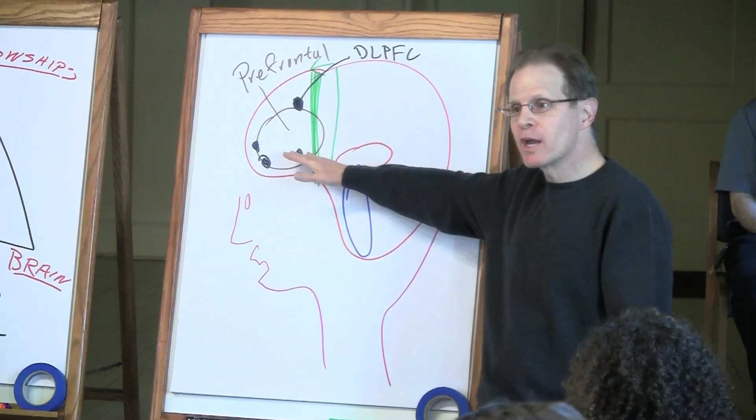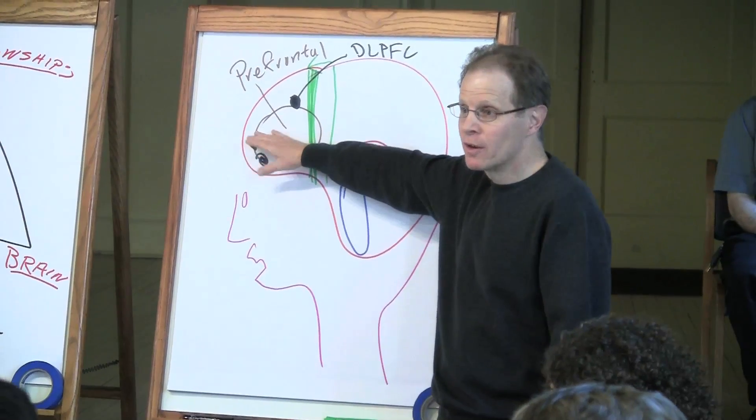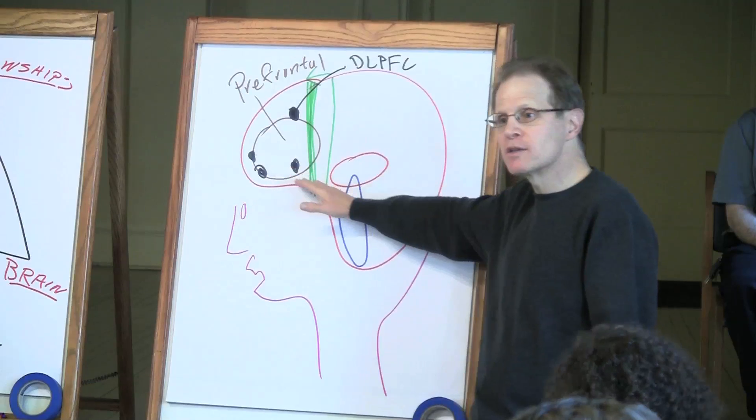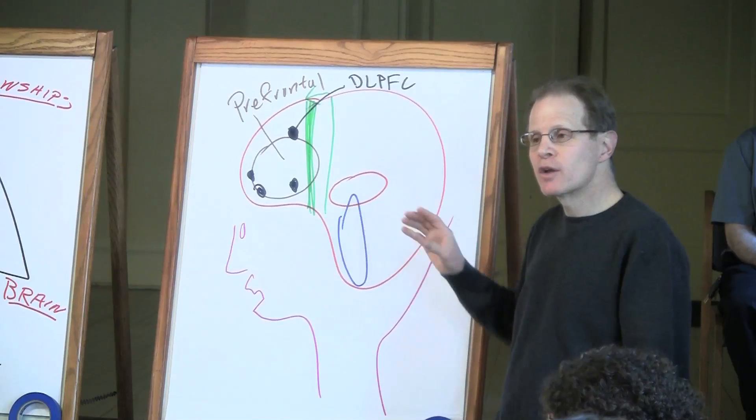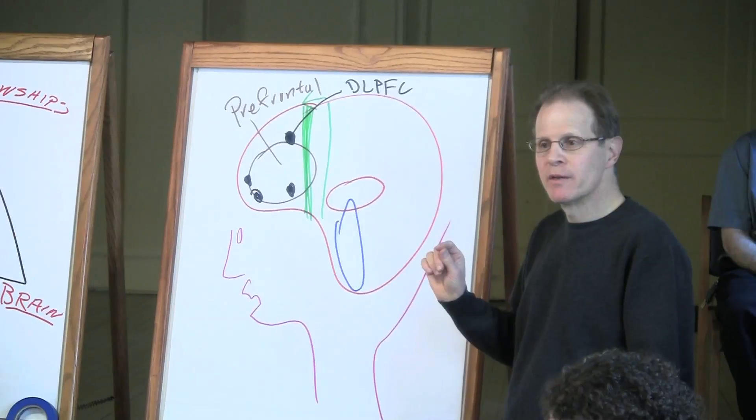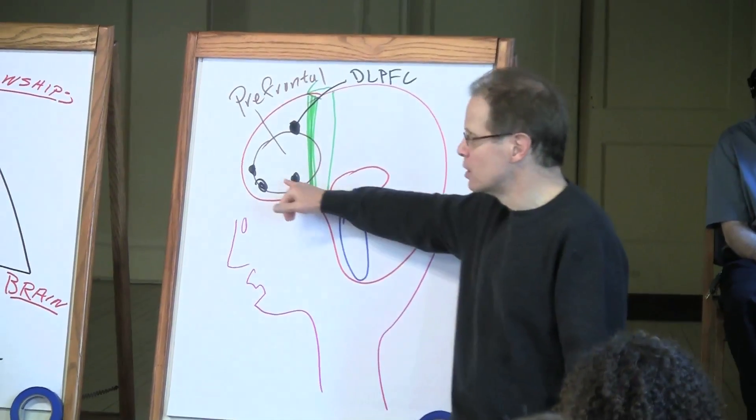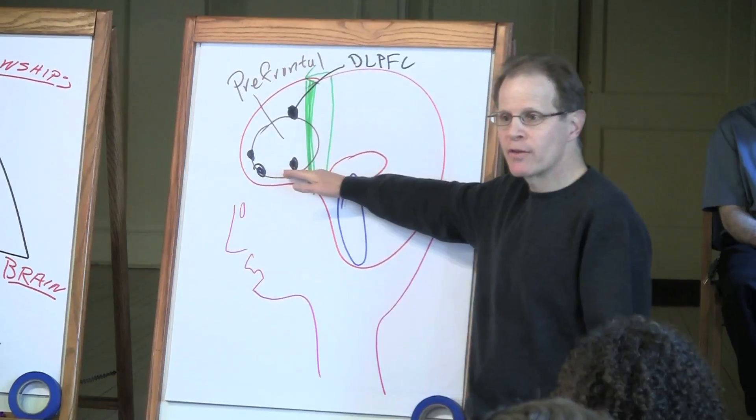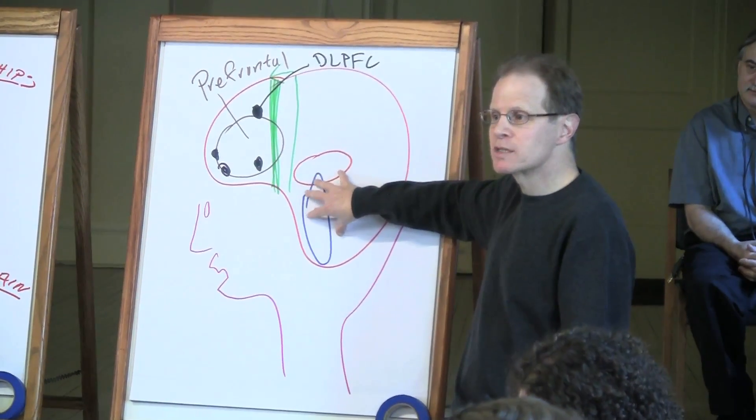Number two, this area of the brain, and studies on reflective practice show these areas get thicker, actually can regulate the subcortical distress. And you get a thing called name it to tame it. So when people develop these things called mindfulness traits, which we talk about in the discussion, you actually can show how there's inhibitory peptides that are secreted to calm the lower distressed areas down here.